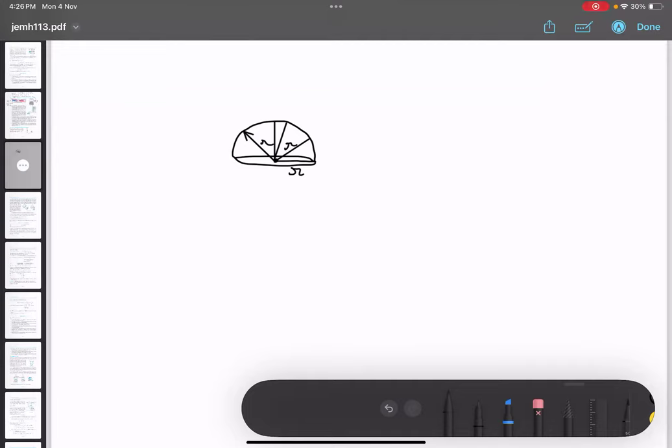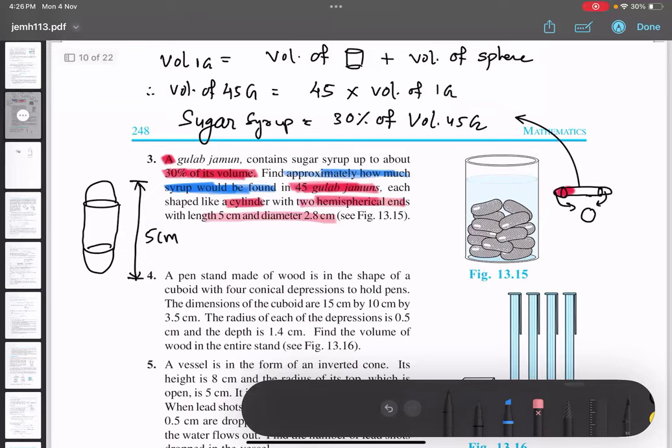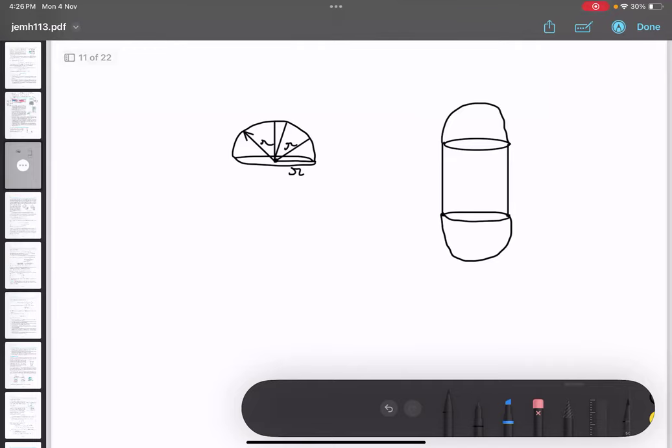Now understand this point and apply it over here. So we have a cylinder over here at the center. Now what is the radius? Diameter is 2.8, so radius is 1.4. So instead of thinking radius like this, this is 1.4, yes or no? So please don't think like this, consider radius like this. This is also 1.4, yes or no? And this is also 1.4.